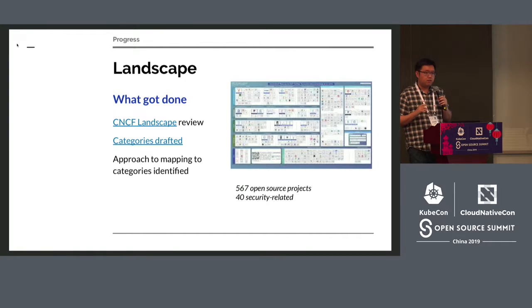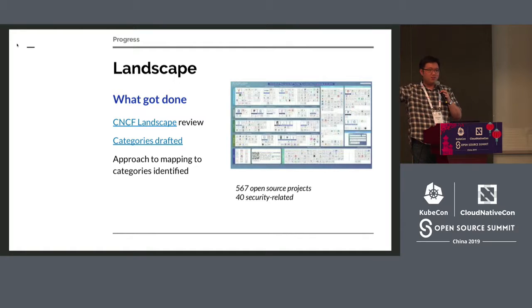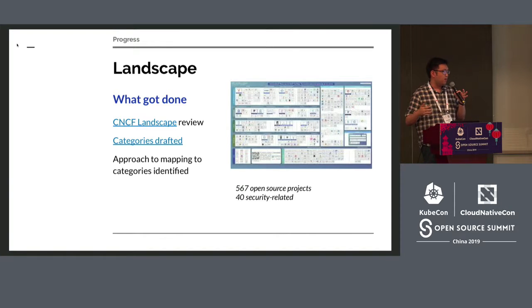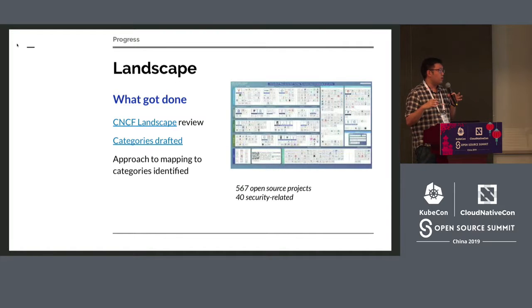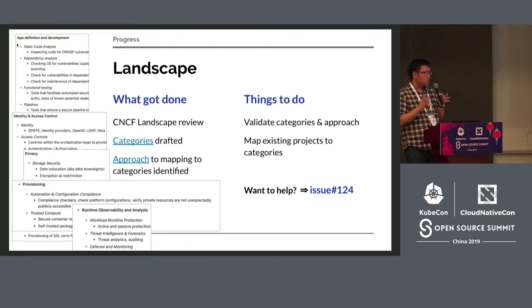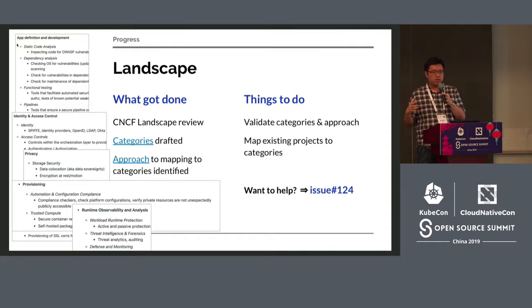One of them is the landscape. Some of you may be familiar with the CNCF landscape — that big picture with a ton of different logos classifying what each cloud native technology is and where it belongs, whether it's orchestration, runtime, etc. With SIG Security, we want to do a similar thing for security — having a more fine-grained classification of what each security project is. Is it something to do with identity? Is it something to do with privacy? Once we classify all the projects, we can see the gaps and determine where more projects should be or where more interest is needed.